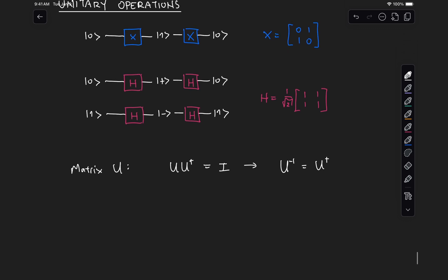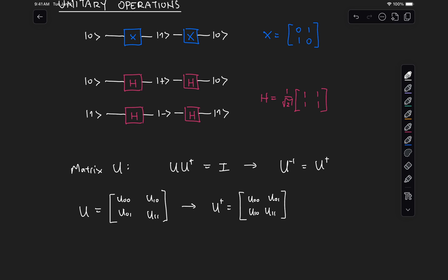In the case of a single qubit, the conjugate transpose of a matrix with elements U00, U01, U10, U11 is found by taking the transpose — leaving the diagonal elements alone but flipping the off-diagonal terms to get U10 and U01 — and then taking the complex conjugate of each element.